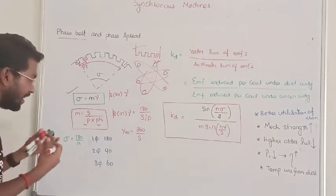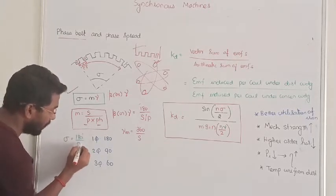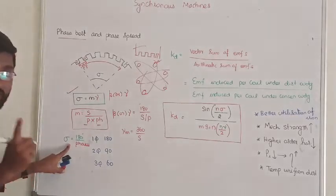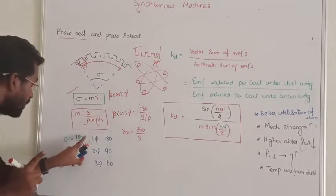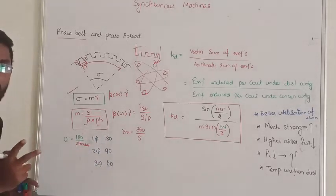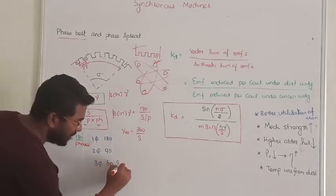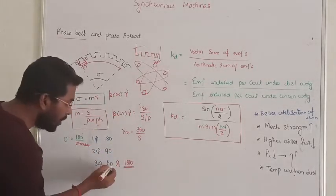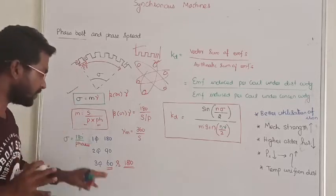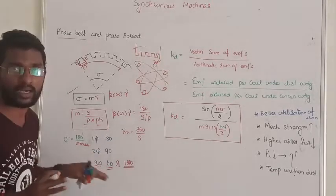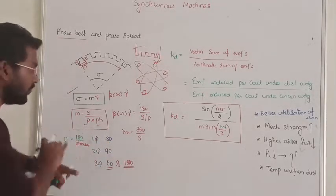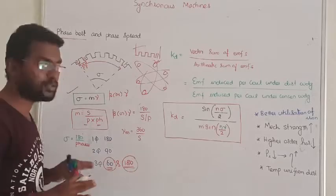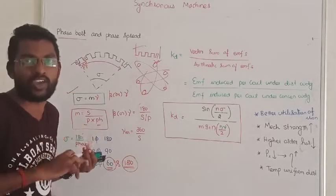Now for face spread, the formula is 180 degrees divided by the number of phases. For a single phase machine, phase spread equals 180 degrees. For a two phase machine, space spread equals 90 degrees. For a three phase machine, space spread equals 60 degrees. Sometimes in three phase we also use 120 degrees. These values are always fixed for single phase, two phase, and three phase machines.